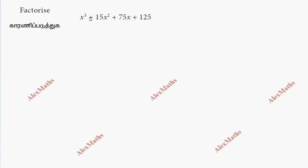If we look at the terms, we have x cube. And in 125, there are 5 cubes. So if we use our identity, a plus b whole cube, this is the formula: a³ plus 3a²b plus 3ab² plus b³.